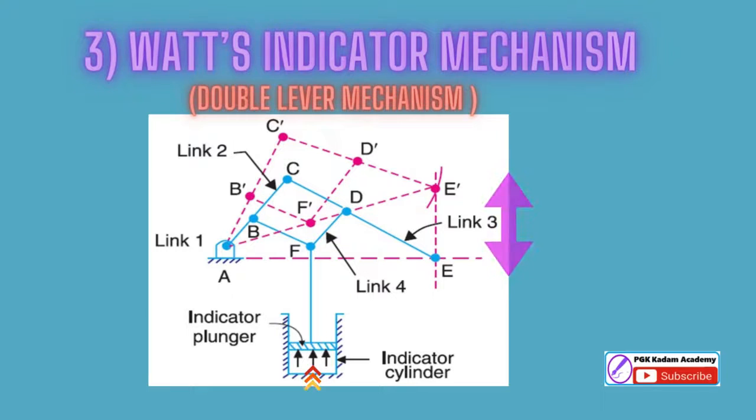The four links are: fixed link at A, link AC, link CE, and link BFT. It may be noted that BF and FT form one link because these two parts have no relative motion between them.